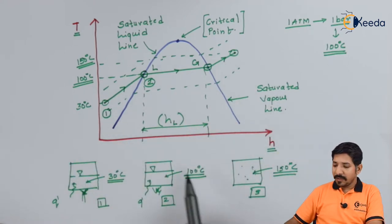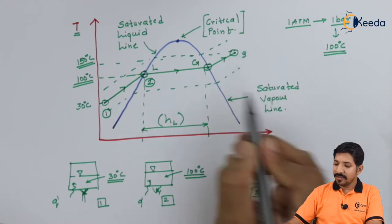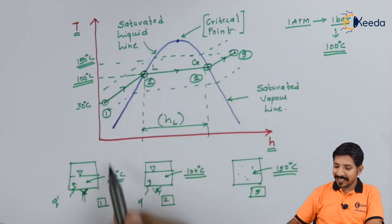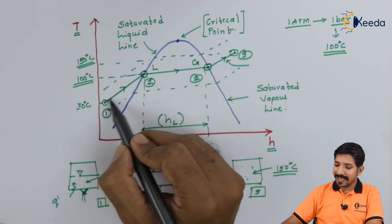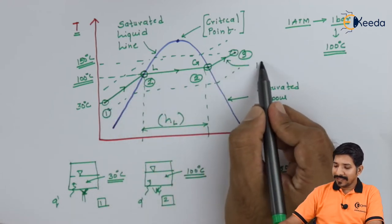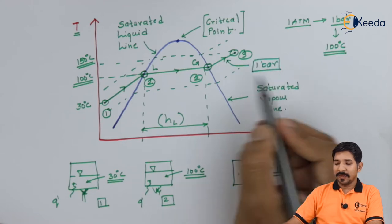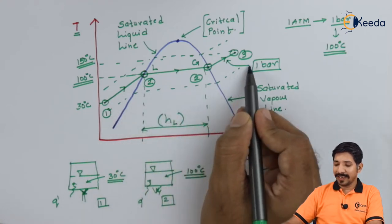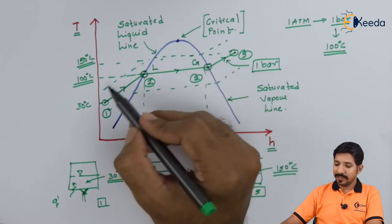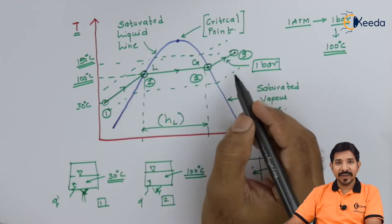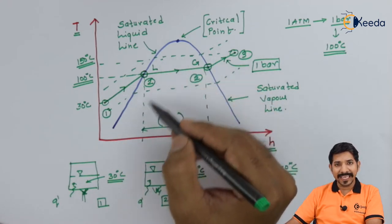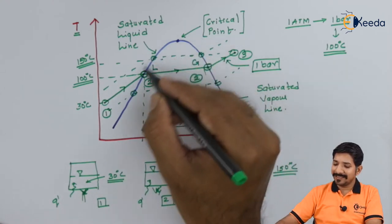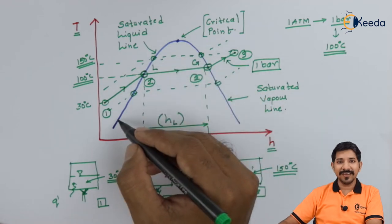This curve is plotted for 1 atm. Similarly, if we reduce the pressure the line shifts one way, and if we increase the pressure it shifts the other way. If we plot this kind of curve for all ranges of pressure and join those points, we end up with what they call the saturation curve.